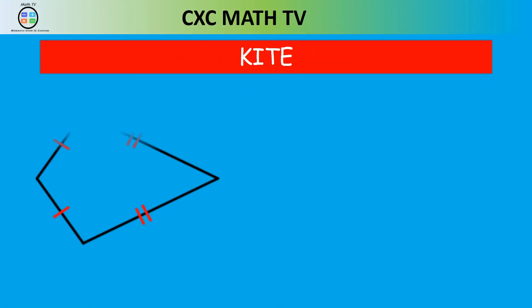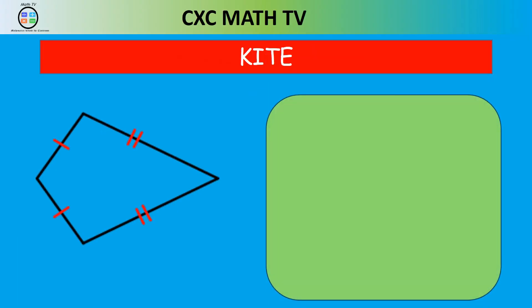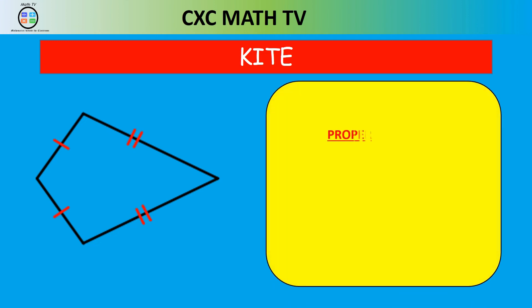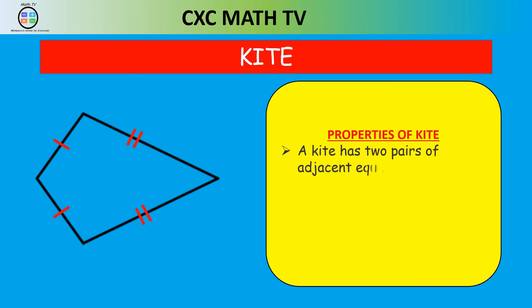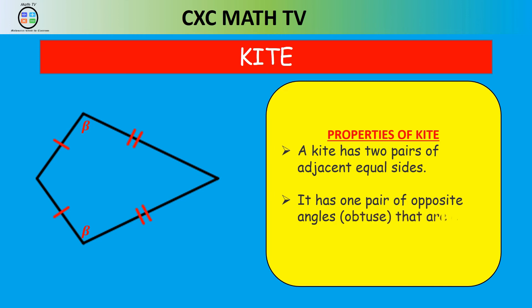The last quadrilateral is a kite. A kite has two pairs of adjacent equal sides — indicated by single and double slash marks — and one pair of opposite angles that are equal. Those equal opposite angles are always obtuse.